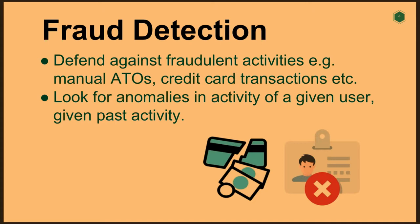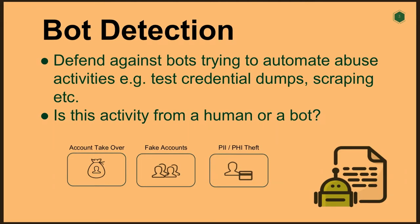The other problem is fraud detection — somewhat similar. You're looking for anomalies in activity, but here specifically anomalies given past behavior. A common example is credit card transactions: does this new transaction fall within the same category of behavior as past transactions? Another category is manual account takeovers, where you're also looking for anomalies given past historical data. In bot detection, you're looking for anomalies given an entire population of data.